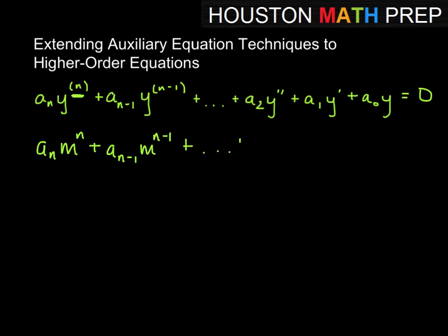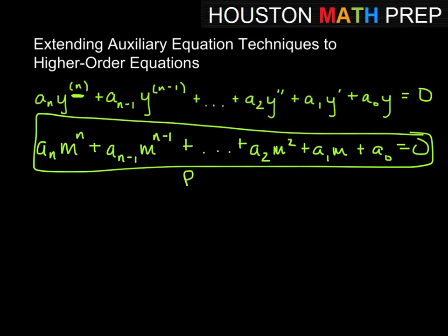etc., until we get down to whatever the coefficient times m squared, plus whatever coefficient we have times m, plus maybe just some constant equal to 0.